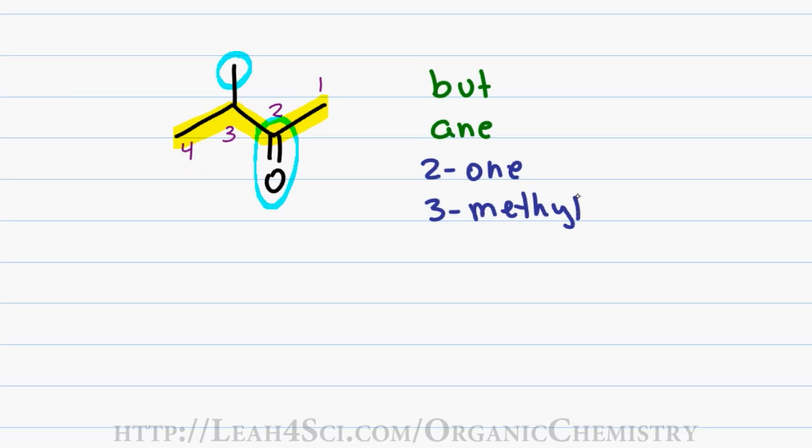When putting the name together, you start with your prefix, first name, last name and then your suffix. However, you can pull 2 in front of the first name allowing you to drop the E in ane for a final name of 3-methyl-2-butanone.